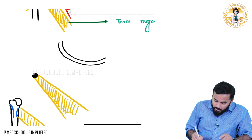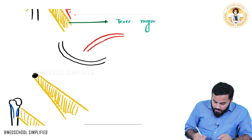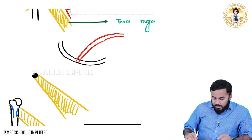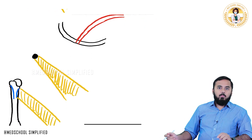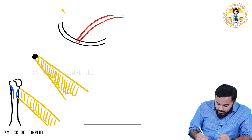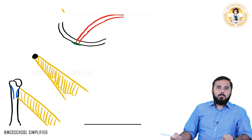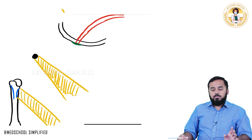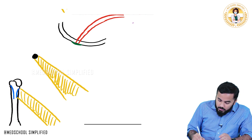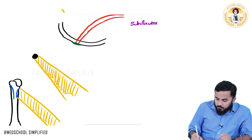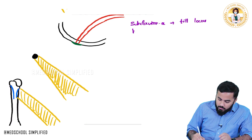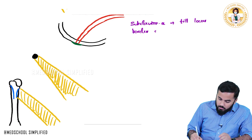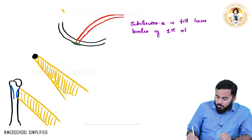The subclavian artery passes down over your first rib — till the lower border of the first rib, this is called the subclavian artery. From here the axillary artery will start. So to note: subclavian artery extends till the lower border of your first rib.